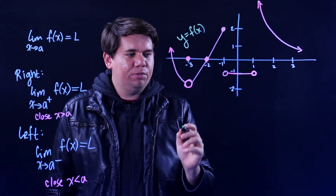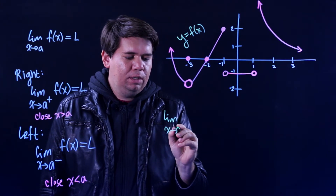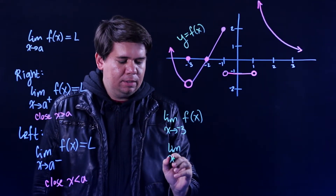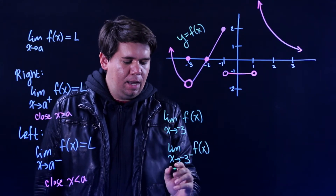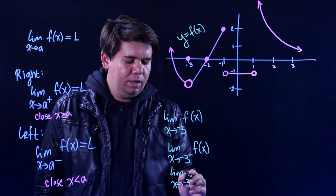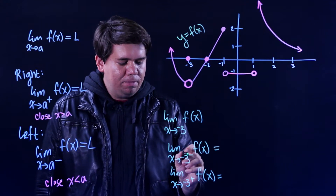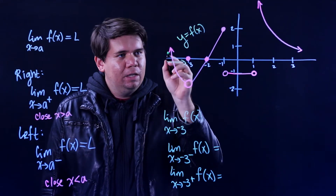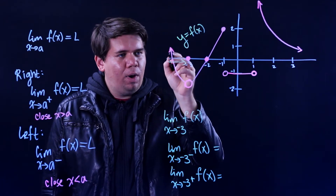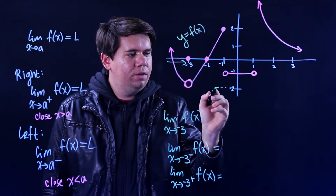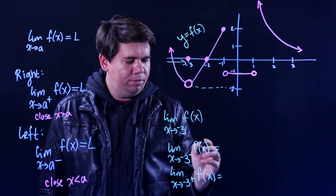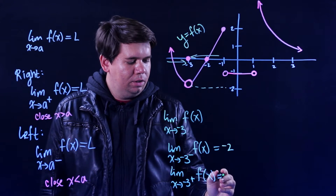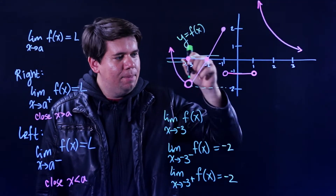Let's begin thinking about what's going on at negative 3. What is the limit as I approach negative 3? Before we think about this overall limit, let's think about the limit as I approach negative 3 from the left-hand side and the limit as I approach negative 3 from the right-hand side. From the left-hand side, I'm coming in from the negative direction towards negative 3, and as I do, my y values — my function — are getting closer and closer to negative 2. Also, when I come in from the right-hand direction, my values are getting closer and closer to negative 2.